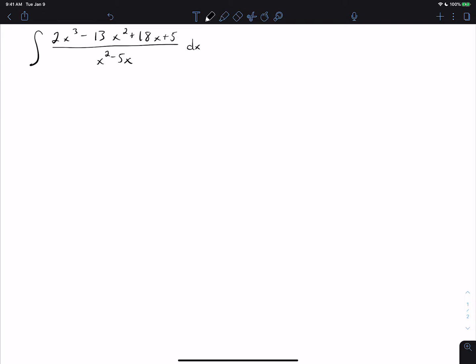So when that happens, typically what we do is we do long division where we divide the denominator into the numerator. So I'm going to do that in red and we're going to do that down here and take x squared minus 5x into the entire numerator 2x cubed minus 13x squared plus 18x plus 5.